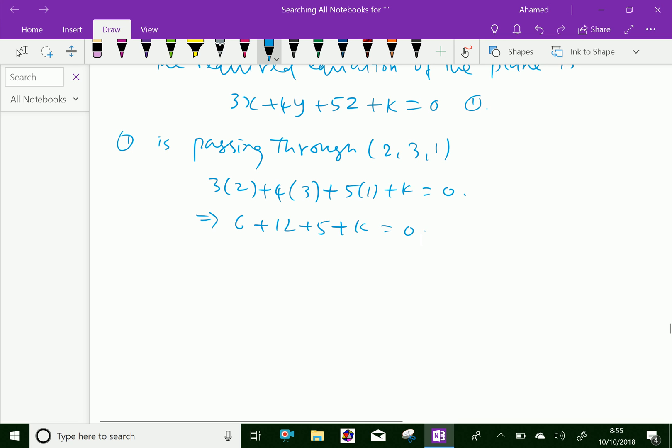So we have 23 plus k equals 0, which gives k equals minus 23.